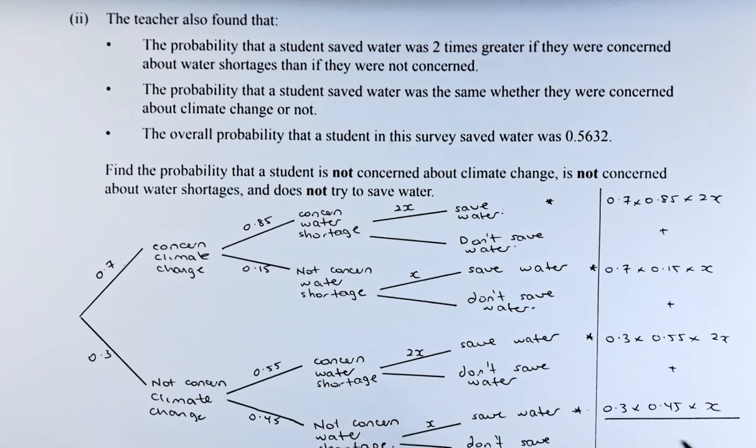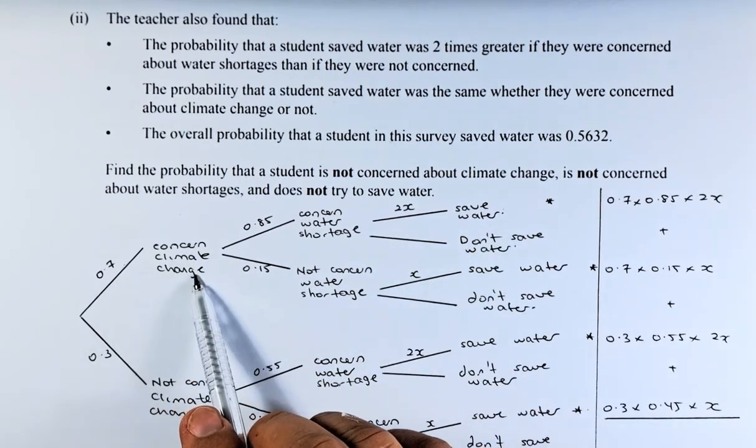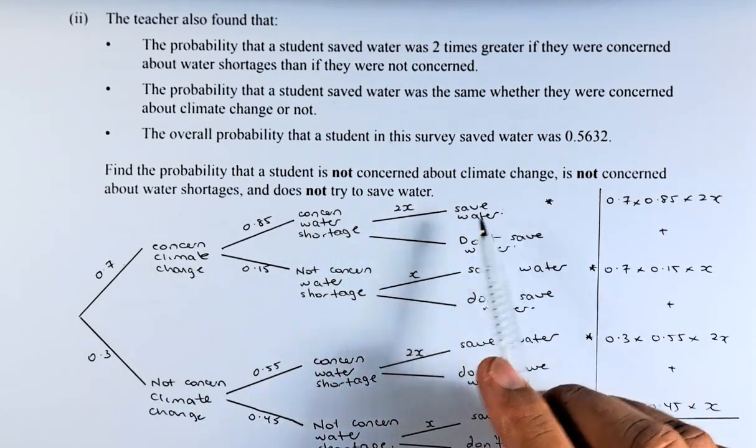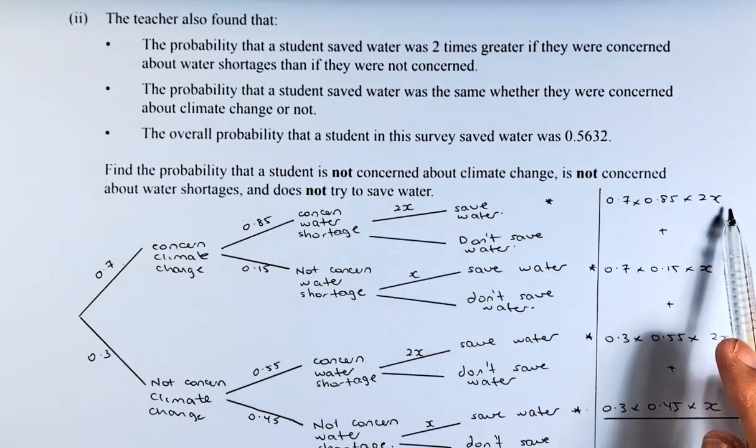So now, to get the total probability, for the first part, concerned about climate change, concerned about water shortage and saved water, you take 0.7 times 0.85 times 2x and that will be the first number.